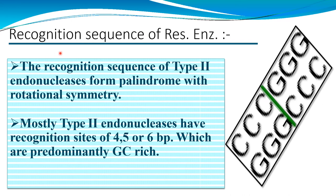The recognition sequence of Type 2 endonucleases forms a palindrome with rotational symmetry. Type 2 endonucleases have a recognition site of 4, 5, or 6 base pairs, which are predominantly GC-rich.